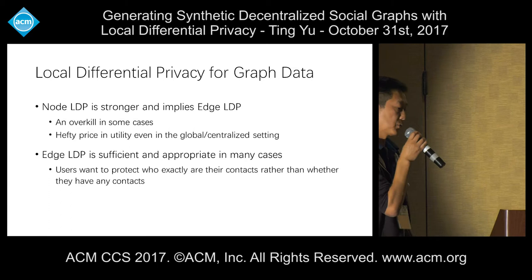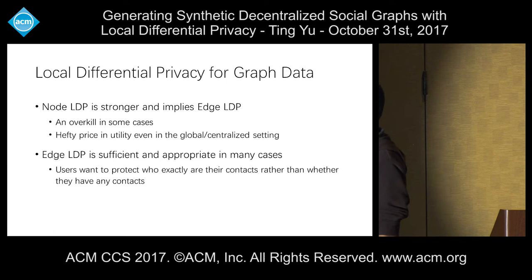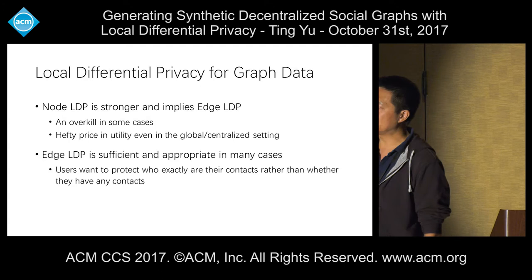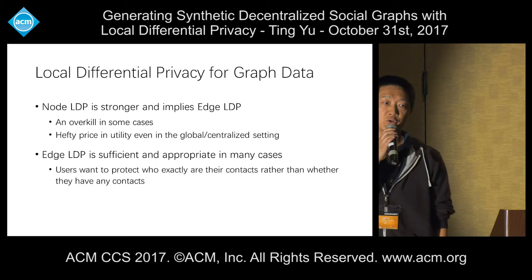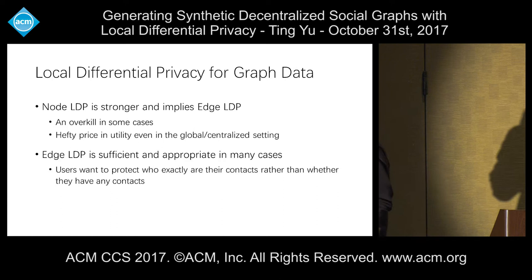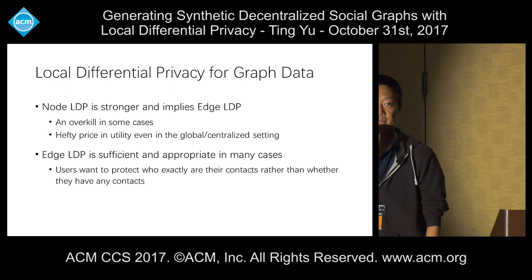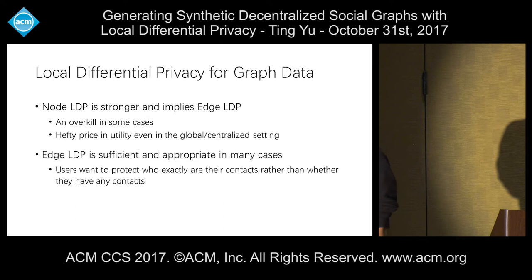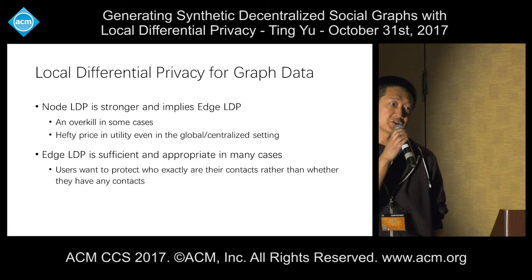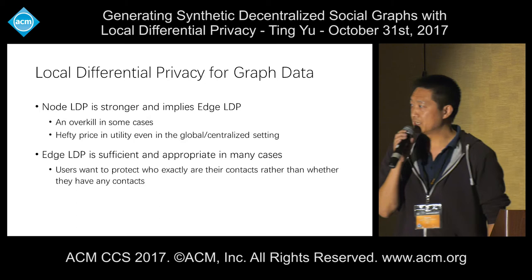Both models are useful in different application domains. Node LDP is a much stronger model—in fact, node LDP implies edge LDP—but in many cases it is overkill. Hiding a single individual requires adding so much noise that you pay a heavy price in data utility. Edge LDP is often sufficient because most of the time we care about the connection or friendship between pairs of nodes. This is the model we adopt in the rest of this talk.